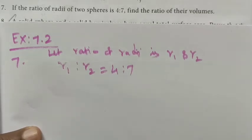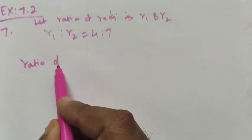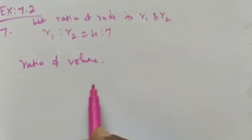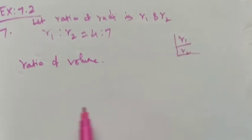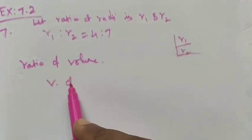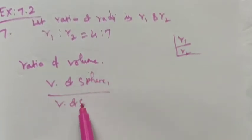We want to find the ratio of their volumes. Ratio means we can write it in the form of division. So it is volume of sphere 1 divided by volume of sphere 2.